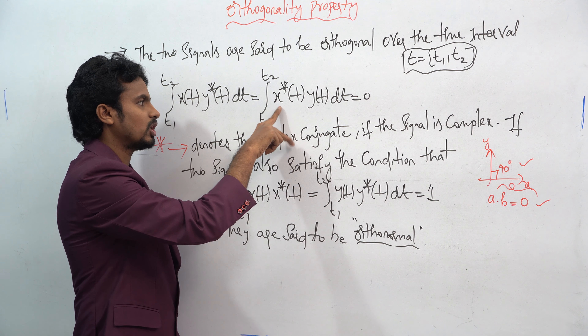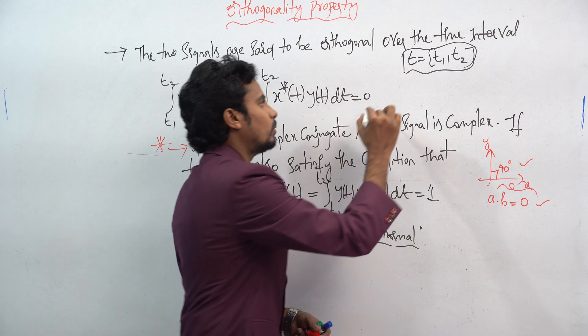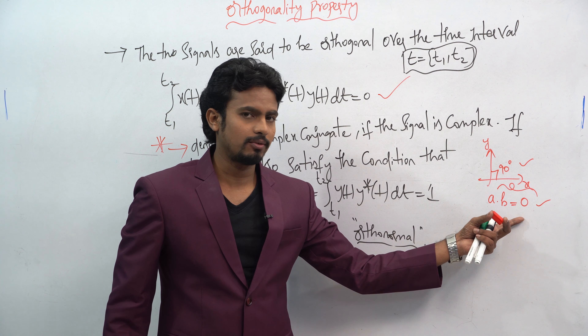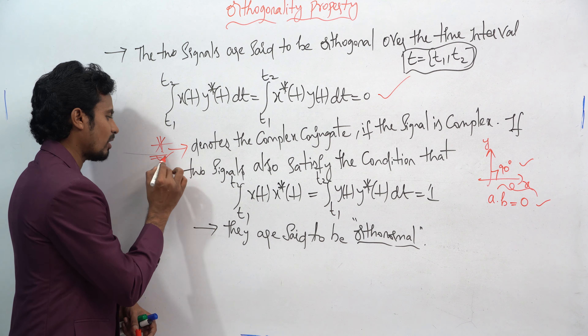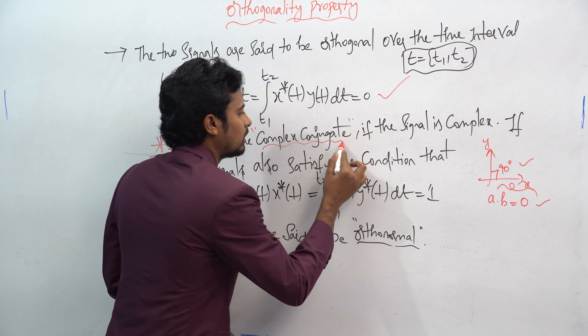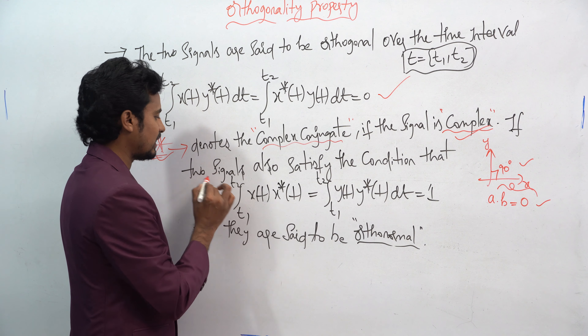You have to multiply x(t) and y-conjugate of t, then integrate over the interval t1 to t2. If you get the answer 0, the orthogonality property is satisfied and those signals are called orthogonal signals. Similarly, the integration from t1 to t2 of x-conjugate of t into y(t) dt must also be equal to 0.